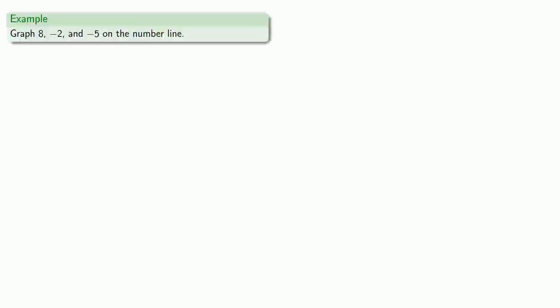So let's try to graph 8, negative 2, and negative 5 on the number line. So we'll put down our origin and run a horizontal line through it.